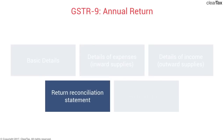That's all for the return reconciliation statement. Remember, this is one of the most important portions of the annual return. The rest of the details are already there from your monthly returns. Note that GSTR-9 is not auto-populated — you will have to fill in the details on your own. The reconciliation covers differences on account of audit and differences on account of assessment order or refund claim.